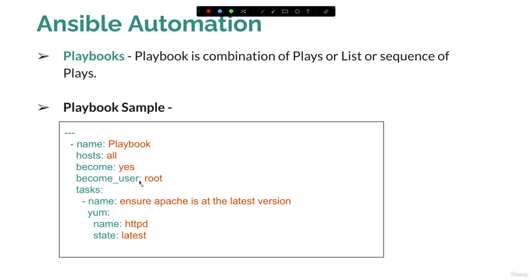Here on your screen you are getting a sample playbook. The very first component is the name — this is optional. The second is hosts, which is the group name in your inventory. The become option corresponds to the hyphen-b flag used in ad hoc commands — whenever we wanted to execute something using the root user on AWS nodes, because the EC2 user doesn't have installation access, we used become.